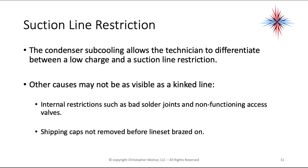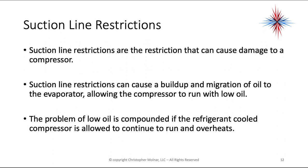The condenser sub-cooling allows the technician to differentiate between a low charge and a suction line restriction. Other causes may not be as visible as a kinked suction line — you can have internal restrictions such as bad solder joints and non-functioning access valves, or shipping caps that were not removed before the line set was brazed on. Suction line restrictions can cause damage to a compressor by causing a build-up and migration of oil to the evaporator, allowing the compressor to run with low oil levels. The problem of low oil is compounded in refrigerant-cooled compressors, as they will continue to run and overheat.